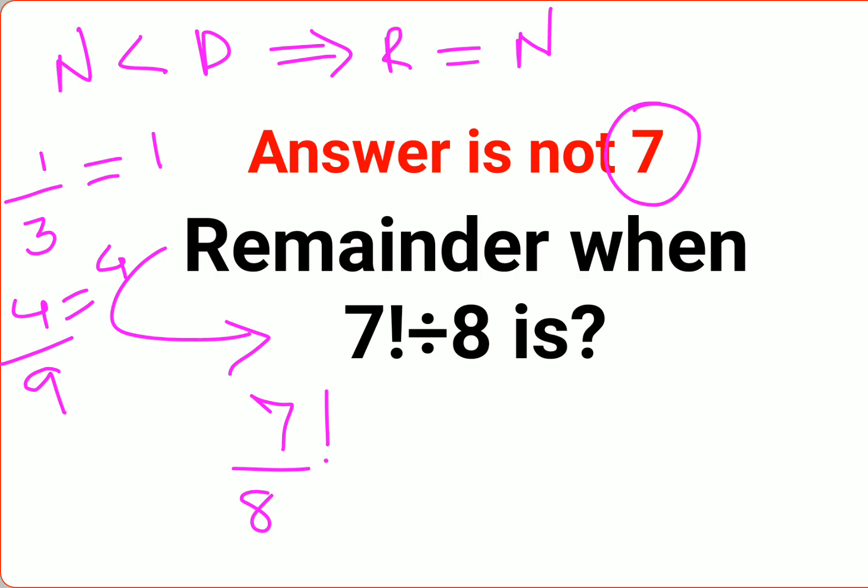But here we did not have just 7, we had 7 factorial. Now what is 7 factorial? It is basically multiplication of 7 in decreasing order until and unless you reach the value of 1. So this is 7 times 6 times 5 times 4 times 3 times 2 times 1, divided by 8.